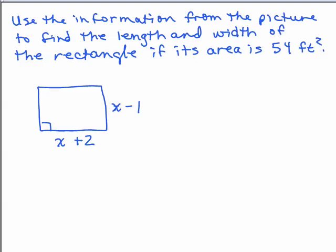Here's another word problem — a geometry word problem where we're going to look at a picture of a rectangle. We're going to use the information on the rectangle and the fact that its area is 54 square feet to find the length and width. The length is x plus 2 and the width is x minus 1, and the area of a rectangle is length times width.